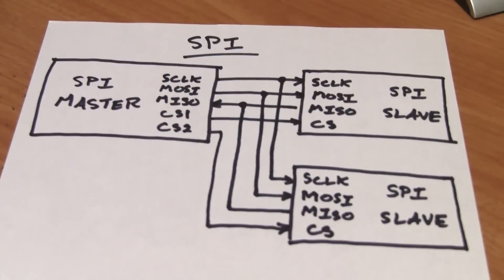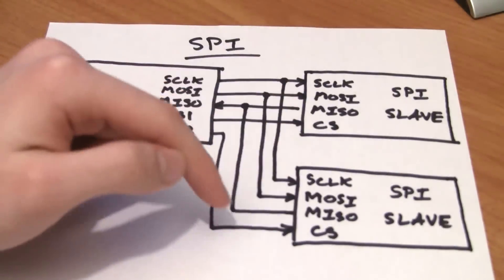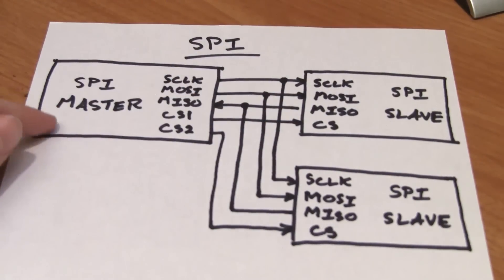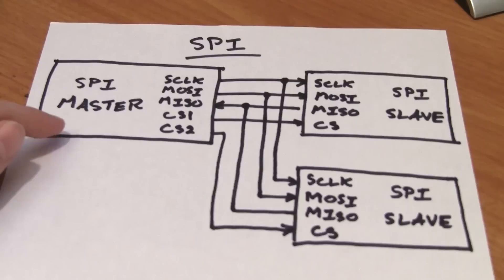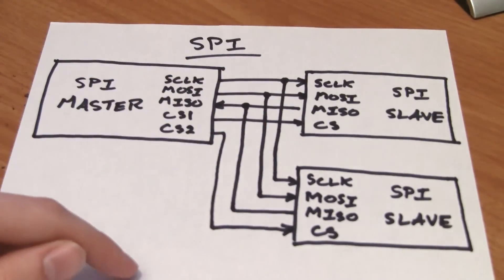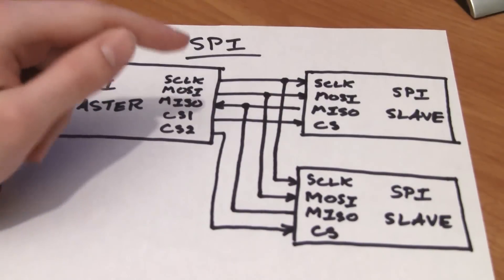Let's talk quickly about how the SPI bus actually works. It's a little bit different from the I2C bus we talked about last week. Similar to I2C, it communicates synchronously, which means you need to have a shared clock signal between all the masters and the slaves. In this picture, I have two slaves and one master drawn. The master in our case will be the Arduino. The master generates a clock signal shared by the SPI slaves. There's also a send and receive line.